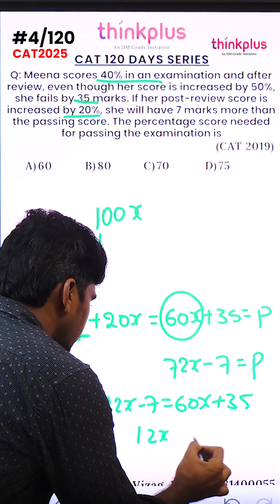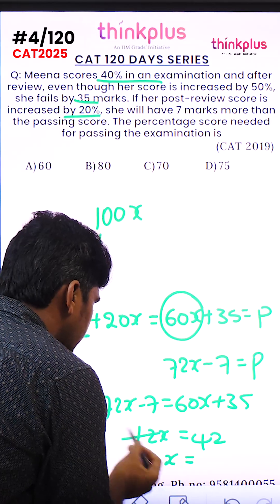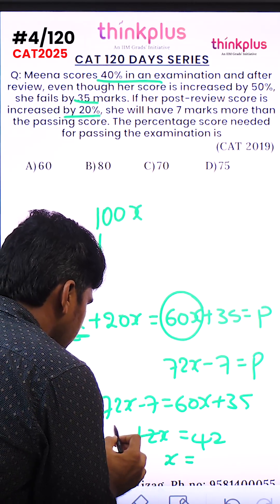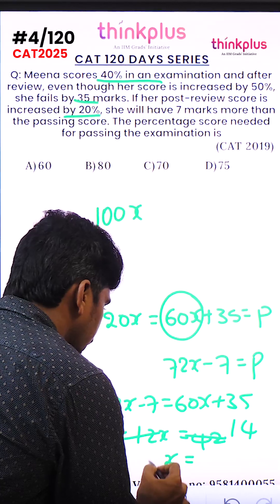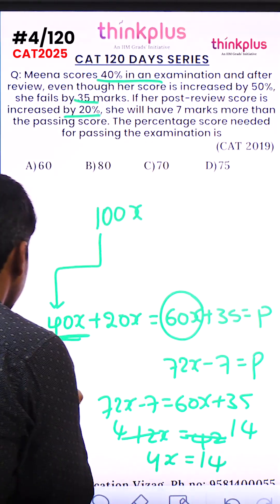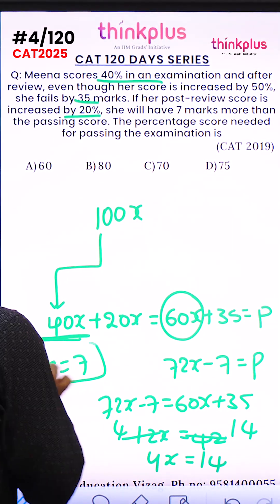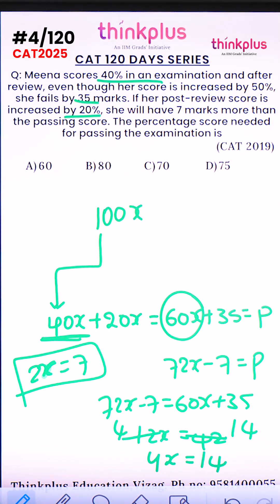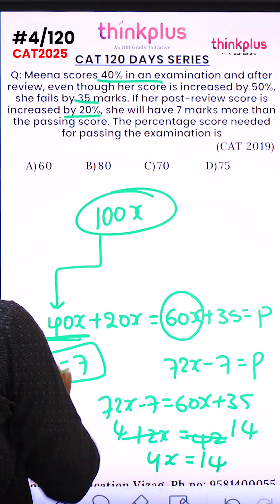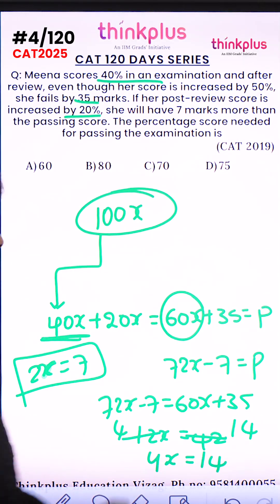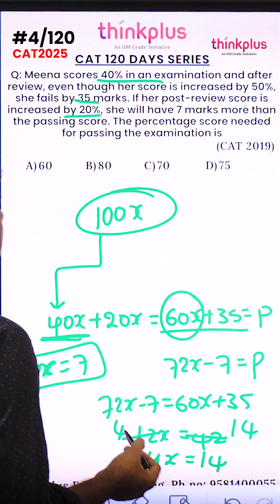Solving: 12x equals 42, so x equals 3.5. Therefore 4x equals 14, and 2x equals 7. The total is 100x, and 2x equals 7. We can find the pass mark, but they are not asking for the pass mark — they are asking for the pass percentage.